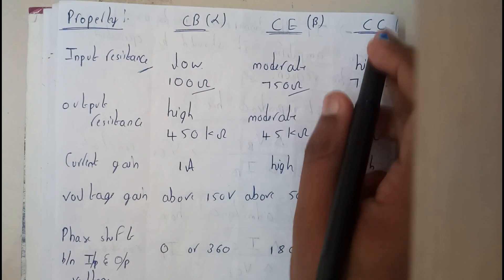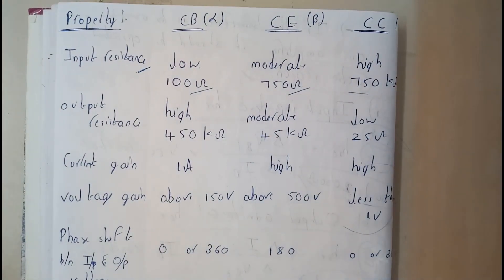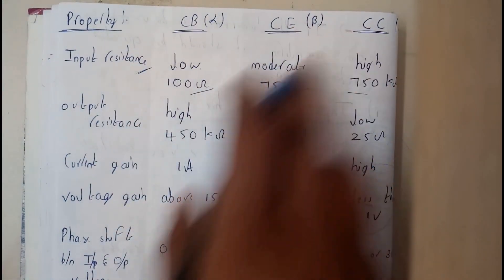It is moderate for common emitter and it is high for common collector. Common base, common emitter, common collector.